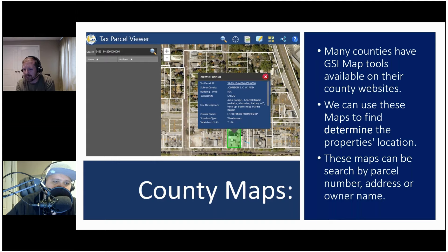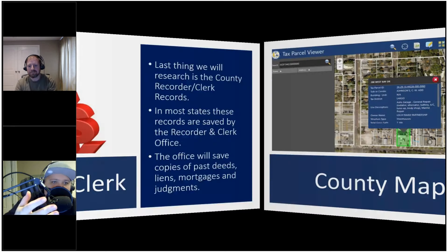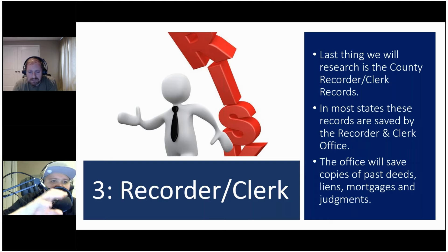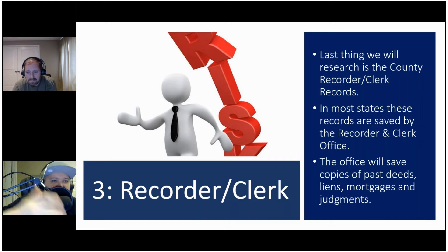GIS records have really changed the most over the last ten to twenty years. Before GIS maps there were plat maps, which were a nightmare. Now with GIS mapping we can learn quite a bit more about a property. They may have floodplain overlays and topographical maps. We've saved ourselves from doing bad deals because of topographical maps — sometimes an overhead view of a piece of land looks flat, but the topographical map shows it's rising significantly in elevation, which could make it unbuildable.